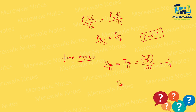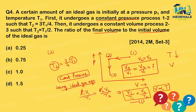So V2/V1 = 3/4. Checking the options — yes, option B, 0.75, is present. Since 3/4 = 0.75, option B is correct.